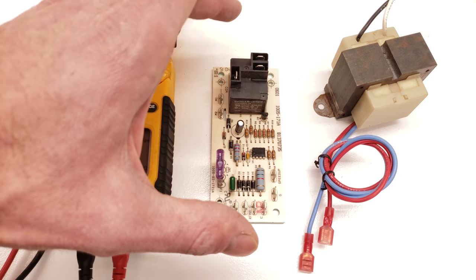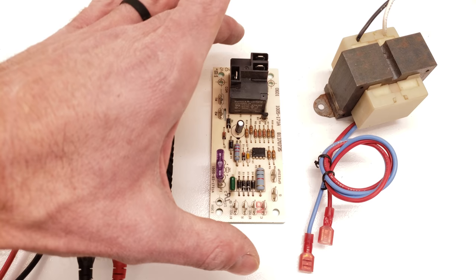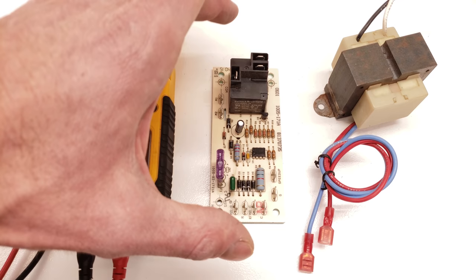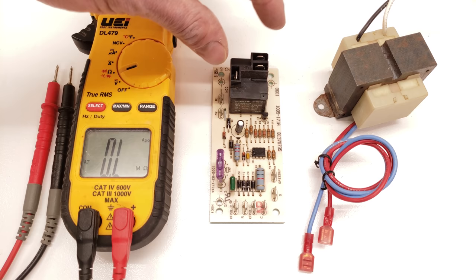This is a fan delay board found in air handlers, whether you have an air conditioning system, heat pump system, or air handler with electric strip heating. I want to explain how it works, show what each terminal is for, and do some testing on the relay.